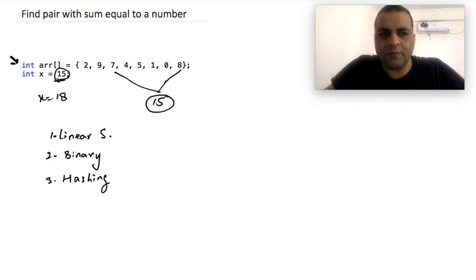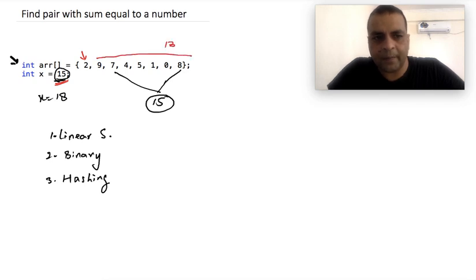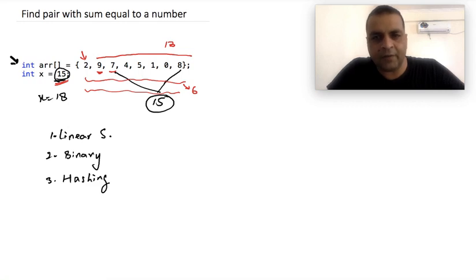The logic of this problem is that for each number — let's say 2 is the number and X is 15 — we want to find a number which when added to 2 gives us 15, so essentially we are trying to find 13 in the rest of the array. Similarly, if 13 doesn't exist, for 9 we try to find 6 because 9 plus 6 equals 15. Then we pick the next element, 7, and try to find 15 minus 7, which is 8, because 8 and 7 add up to 15.